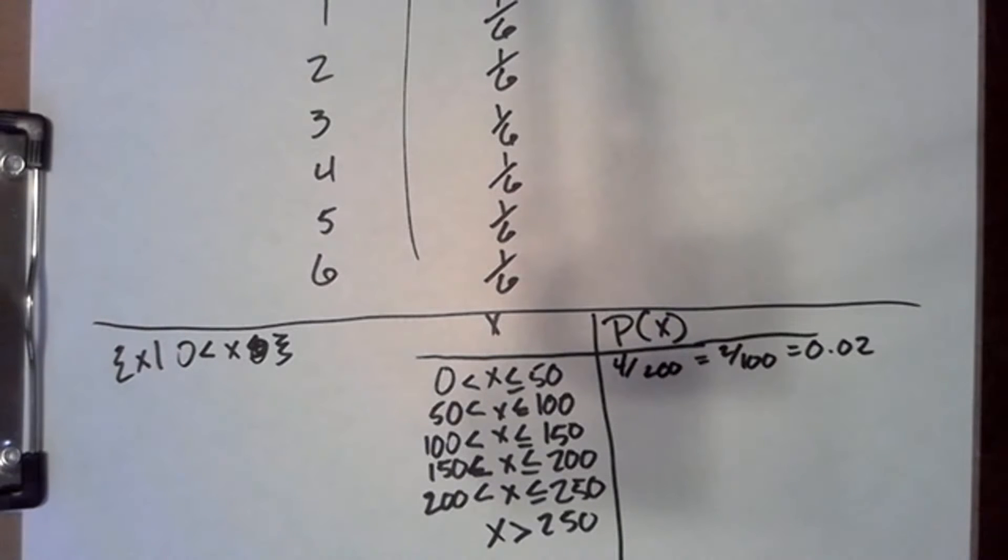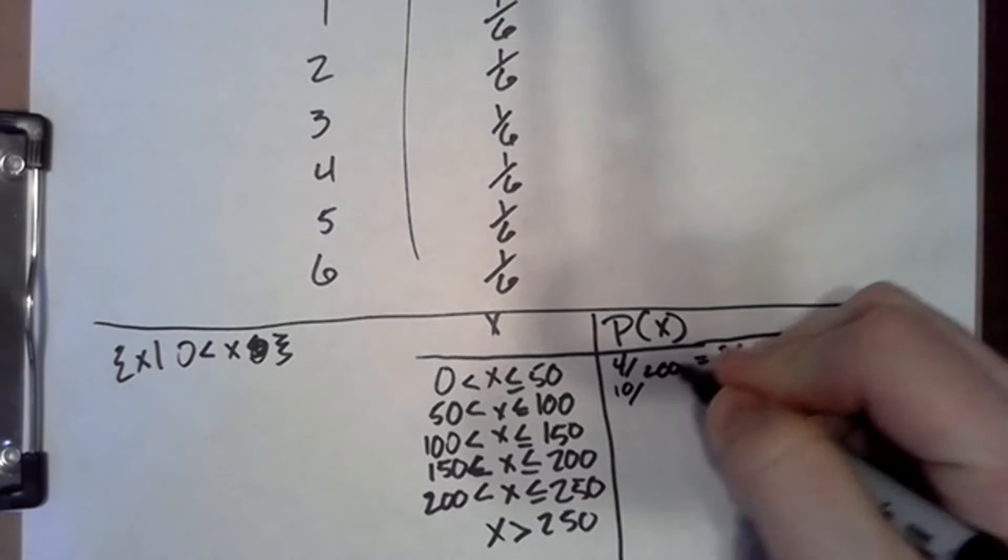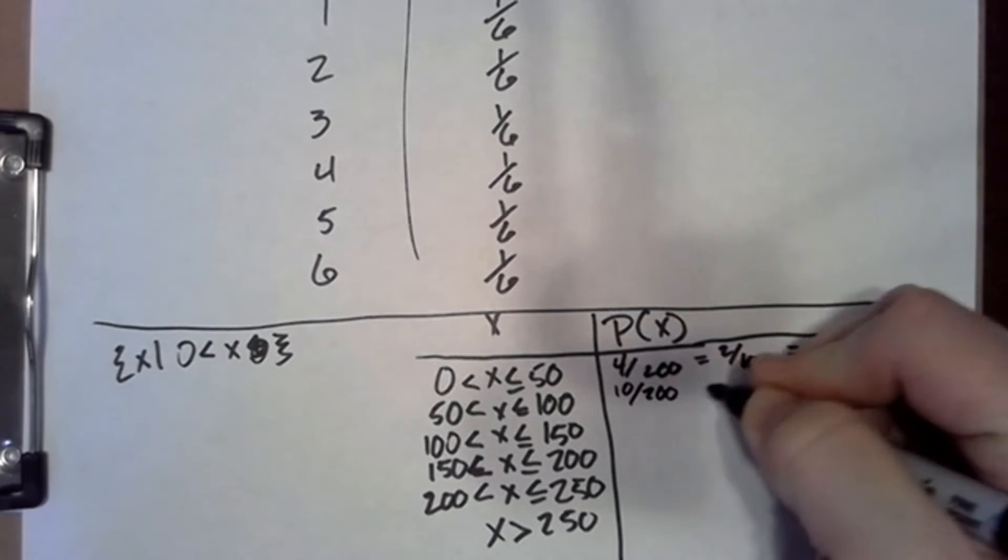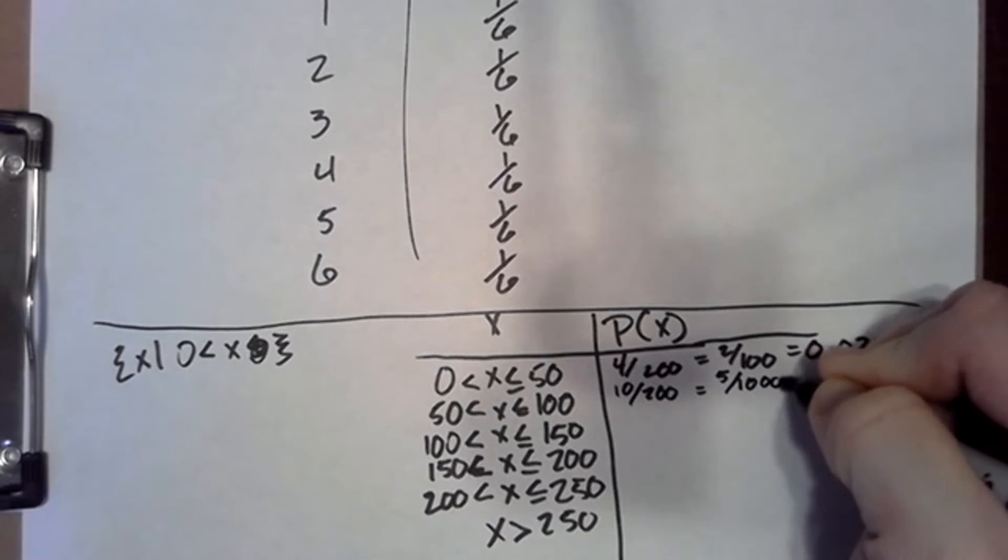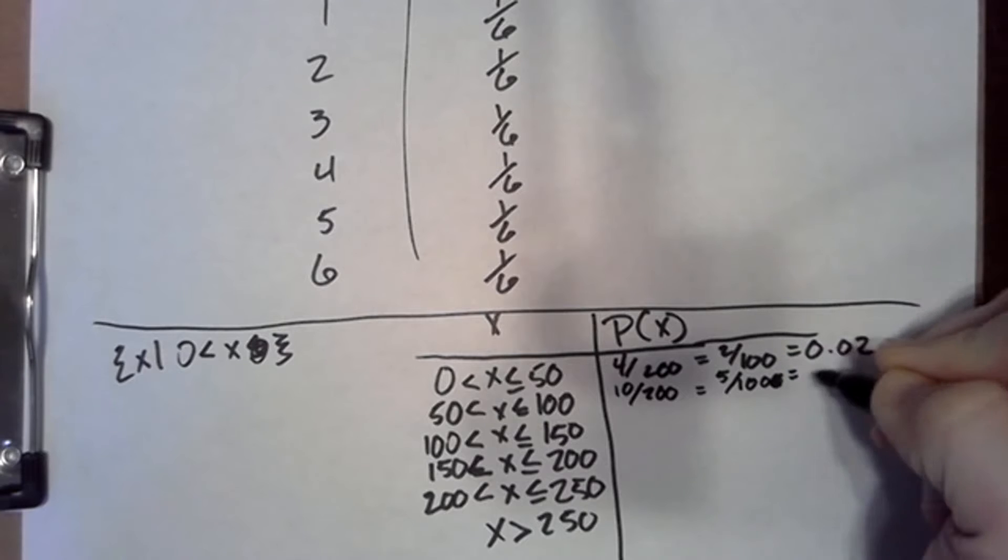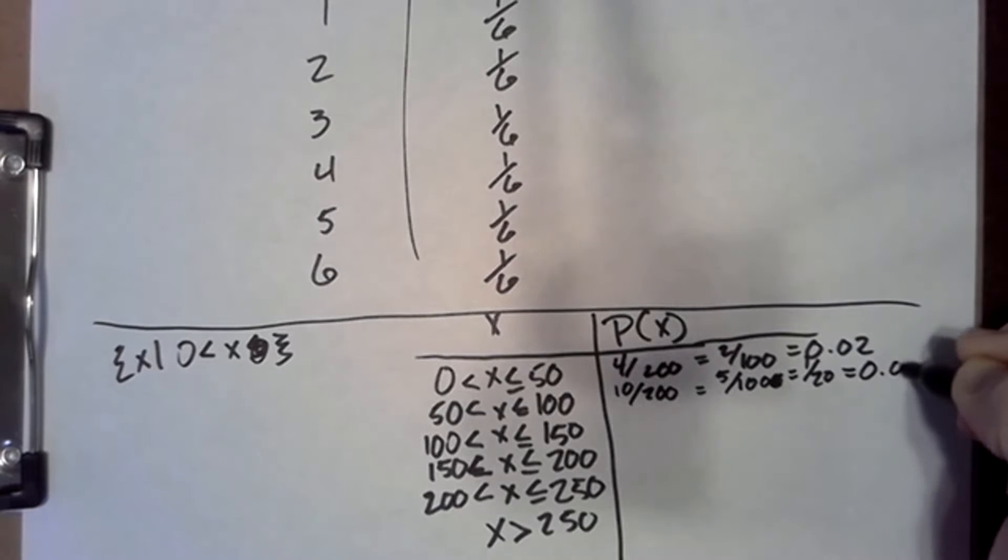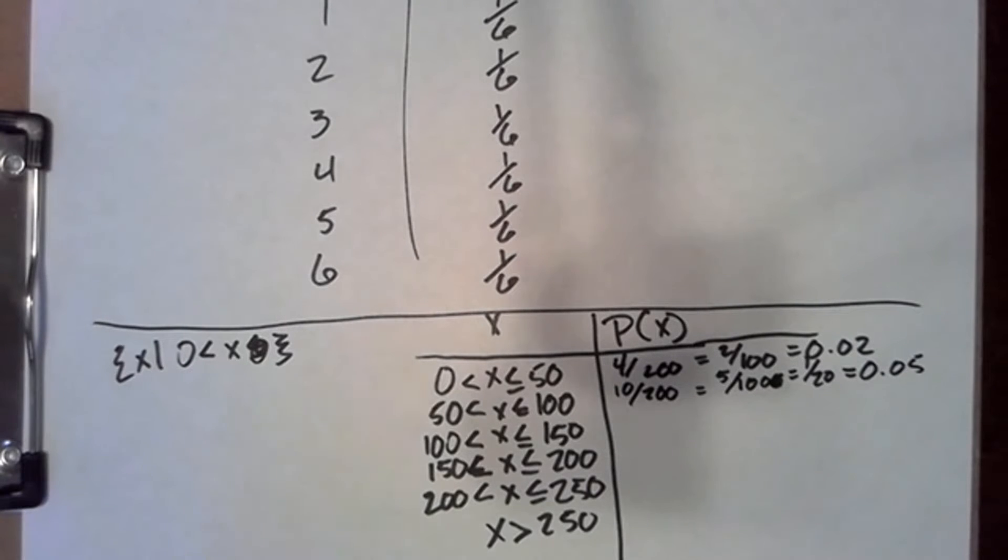We are told that going from 50 to 100 miles, that happens 10 times out of 200, which is the same as five out of 100, which is the same as one in 20 or five hundredths of the time.